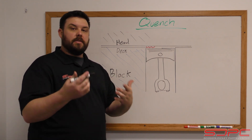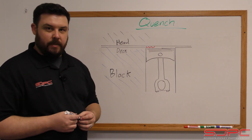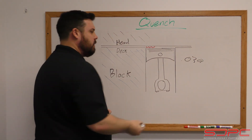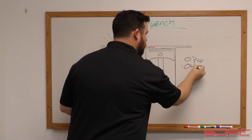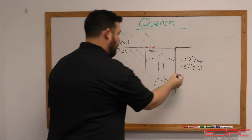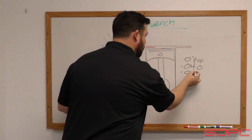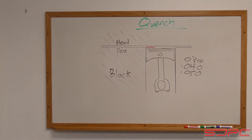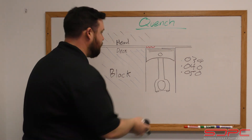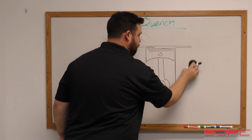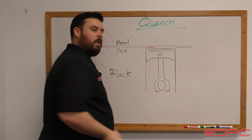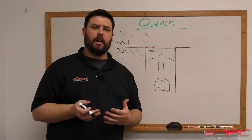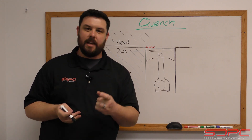There are a lot of theories on what this number should be. Some people say you can do 30 thousandths, some say 40, some say 50. There are a bunch of theories on that. We're not going to cover those theories so much — we're just going to give you some rudimentary guidelines to follow so you can play it safe, mostly for you street guys trying to pick up a little horsepower on a small block, LS2, LS3, or maybe even a 5.3.